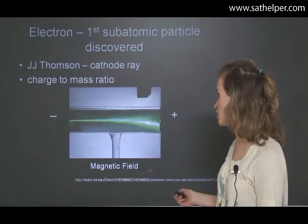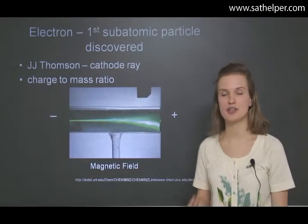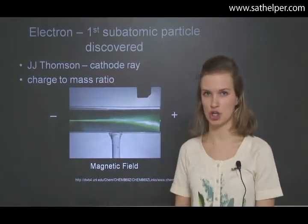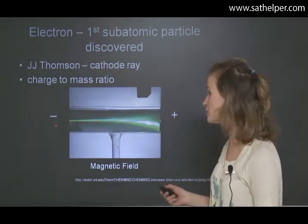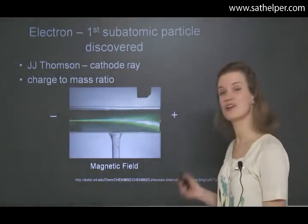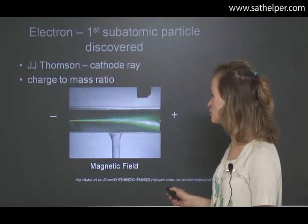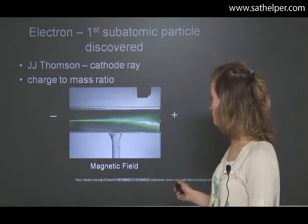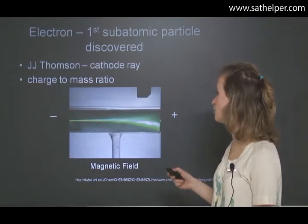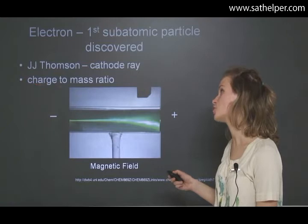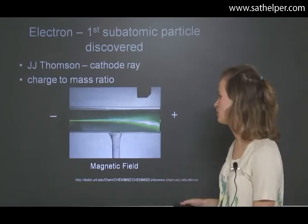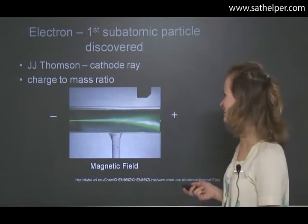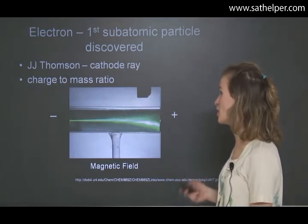Also, J.J. Thomson put in a magnetic field, which, as you know, exerts forces on any moving charge. If a charge is simply still there will not be a force. But since the electrons were moving, there was a force, causing a bending of the electron line. And with that, he could discover the charge-to-mass ratio. You don't necessarily need to know how, although it is pretty interesting if you want to Wikipedia it.